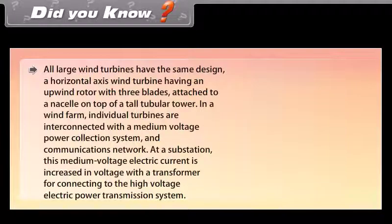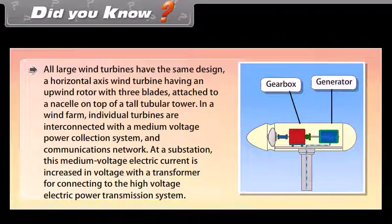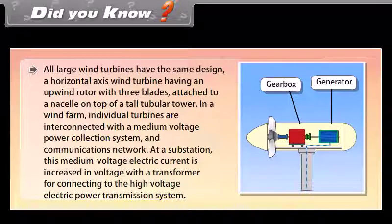Did you know? All large wind turbines have the same design: a horizontal axis wind turbine with an upwind rotor with three blades attached to a nacelle on top of a tall tubular tower. In a wind farm, individual turbines are interconnected with a medium voltage power collection system and communications network. At a substation, this medium voltage electric current is increased in voltage with a transformer for connecting to the high voltage electric power transmission system.